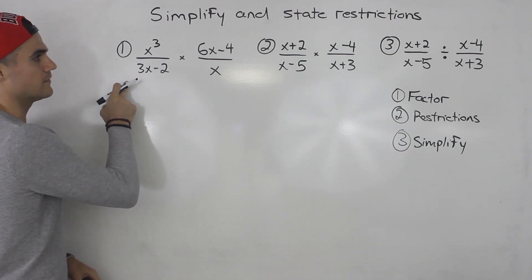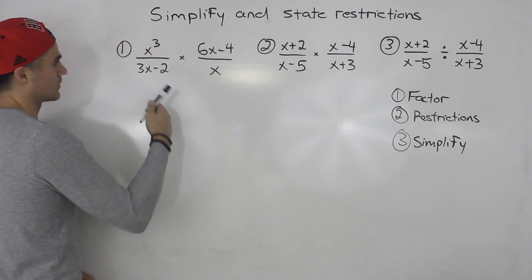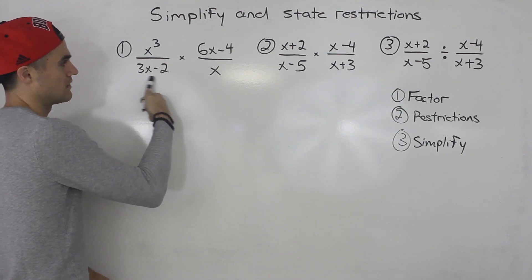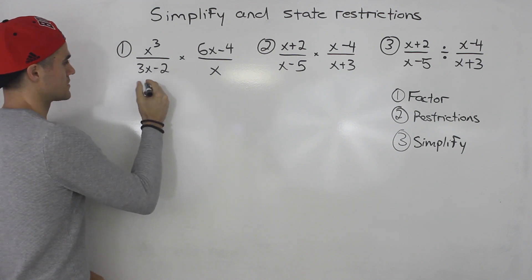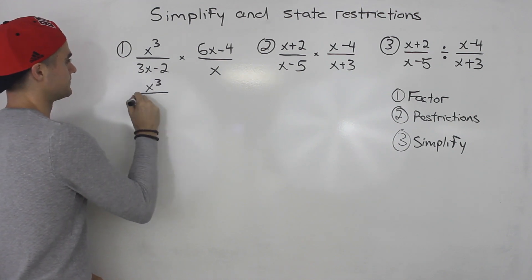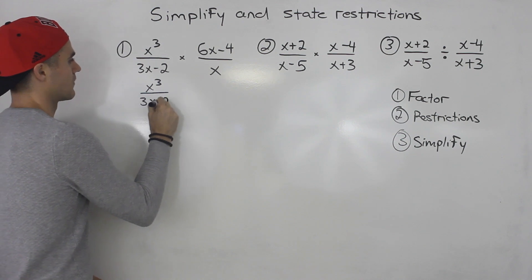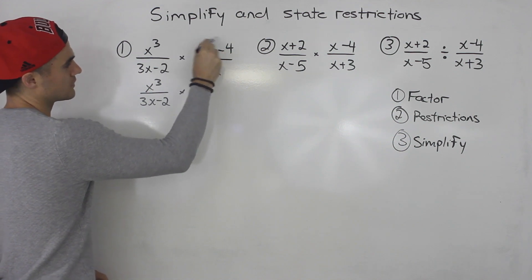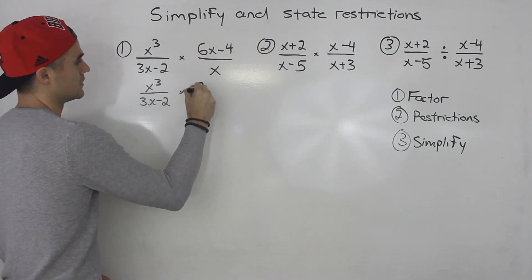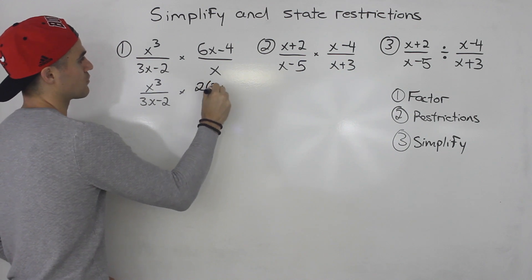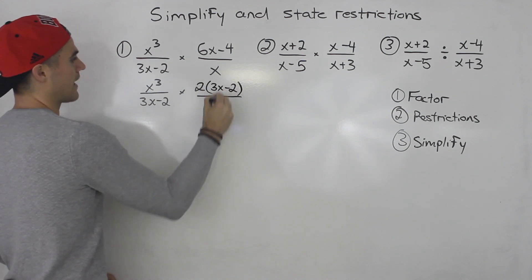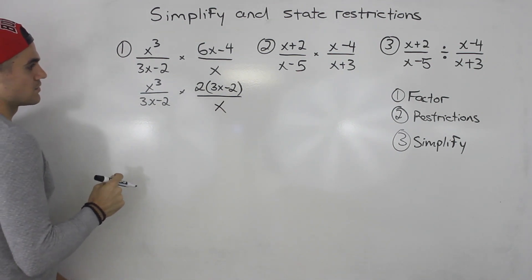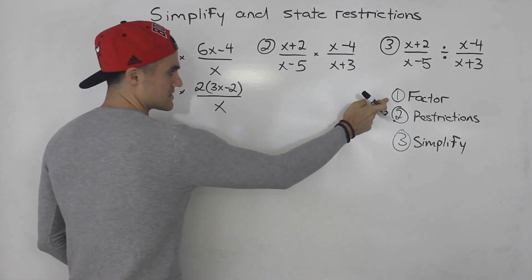Starting with number one, the first step is to factor everything. Notice this first rational function — x cubed over 3x minus 2 — is already fully factored, so we can rewrite it as is. Then we're multiplying by the second rational function. Notice we can factor out a 2 from the numerator, leaving 2 times (3x minus 2), and the x in the denominator can't be factored further. Step one is complete.